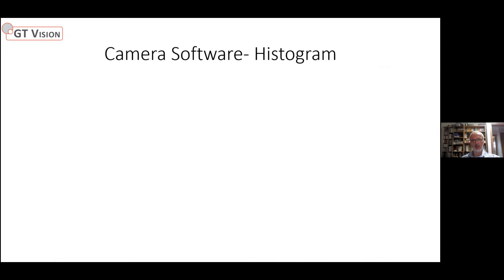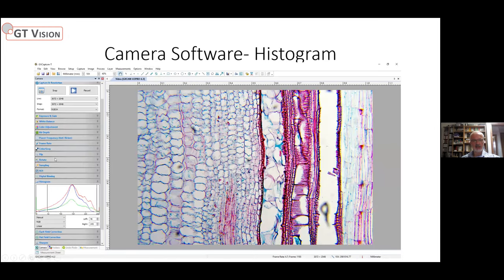Having got the image, you can optimize it further. You can use the RGB histogram to add contrast and make the image punchier. There are also color adjustments — brightness, contrast, and gamma. So once the image is displayed on screen, there are a number of ways to make it look really nice and precise.